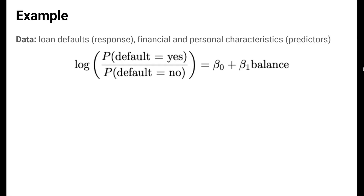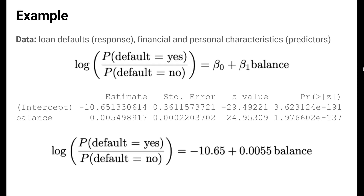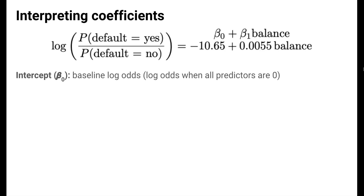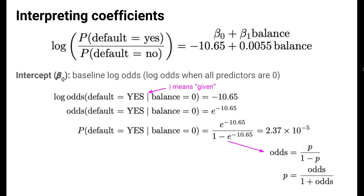Let's look at an example. We have data on the financial and personal characteristics of several individuals and whether or not they defaulted on the loan. We're interested in modeling the chances of defaulting as a function of credit card balance. When we fit this model, we get estimates of negative 10.65 and 0.0055 for beta 0 and beta 1. The intercept beta 0 is interpreted as a baseline log odds — the log odds of defaulting when all predictors are 0. So the log odds of defaulting when credit card balance is 0 dollars is negative 10.65, meaning the odds of defaulting is e to the negative 10.65.